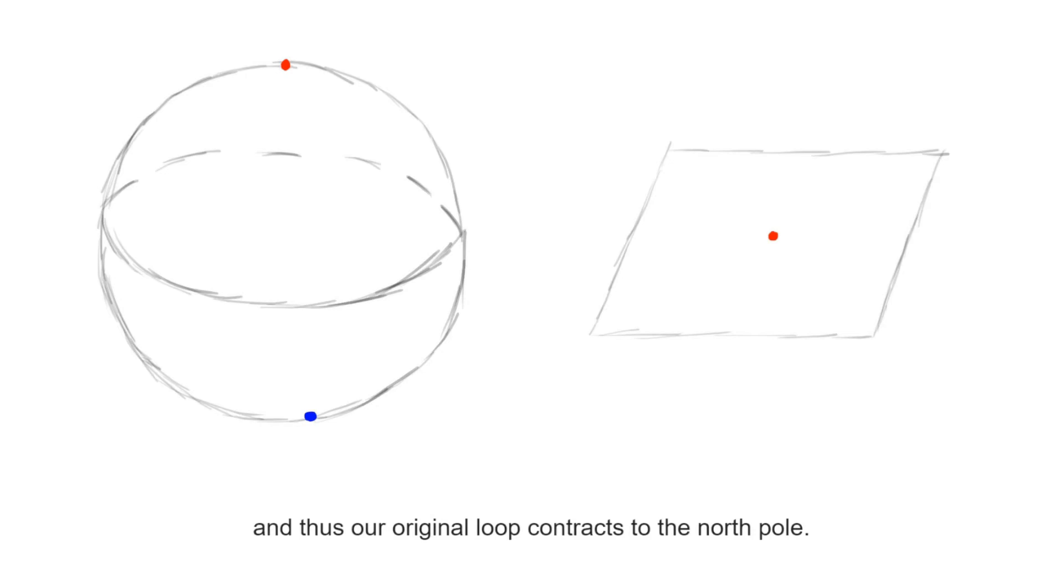In terms of the sphere, this will produce a deformation of our original loop into the constant loop based at the north pole.